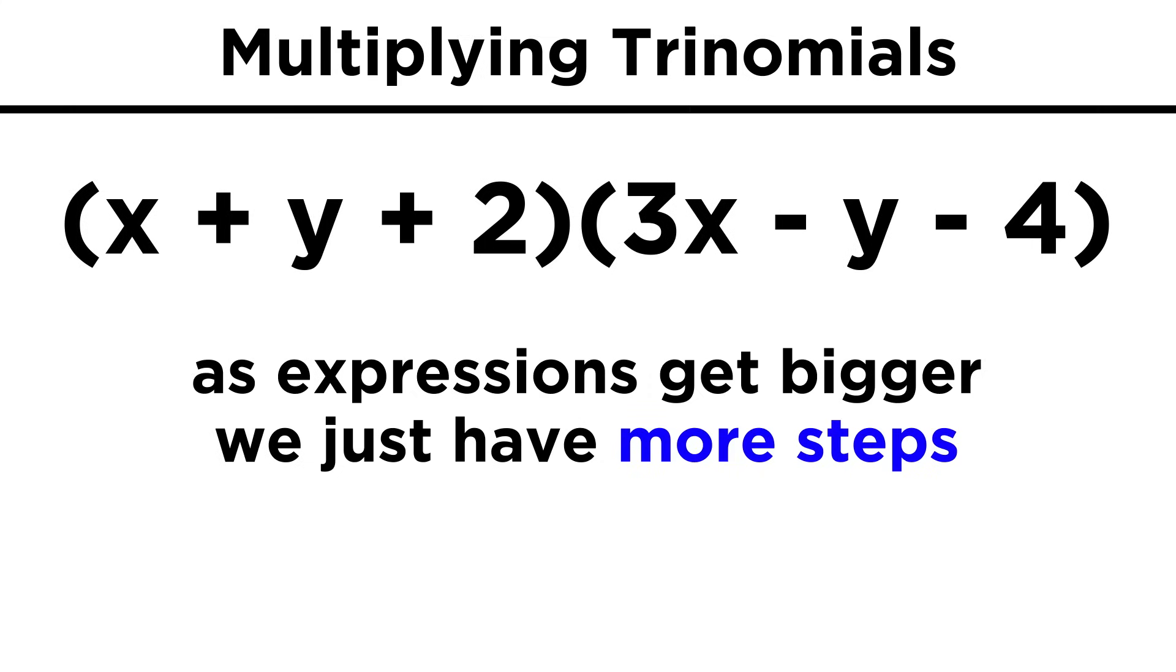If we wanted to multiply a trinomial by a trinomial, it wouldn't be that hard. We would just end up with nine terms, and then condense from there if any like terms exist. Let's check comprehension.